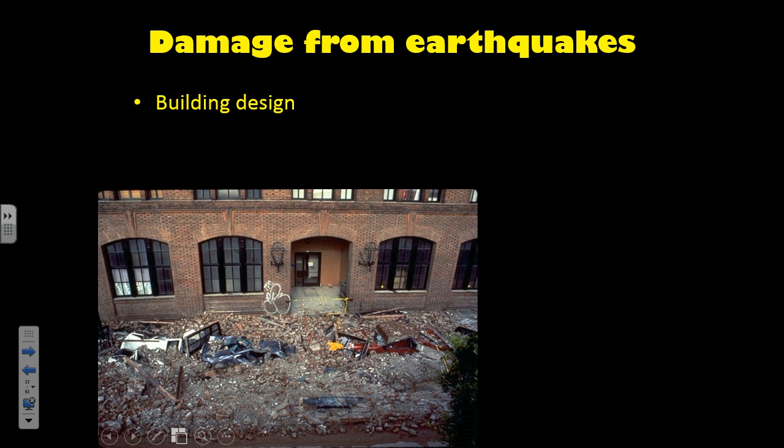This picture here is of an unreinforced brick building — there's no rebar holding the bricks in place. Essentially the mortar breaks out and then bricks rain down on the street and crush things underneath them. Those red, white, and blue objects you see underneath the bricks are cars that were smashed by bricks falling off of this building.